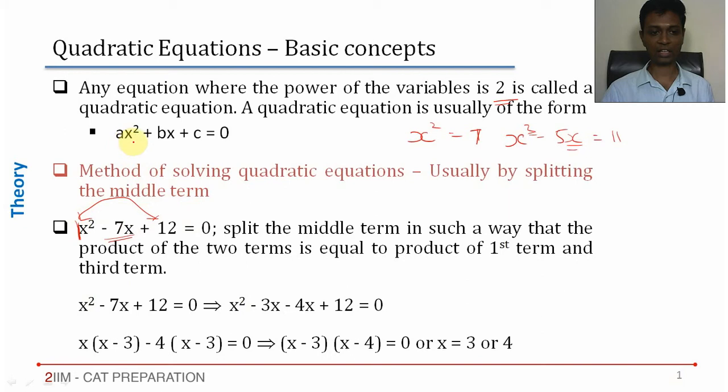If you have an equation which is ax² + bx + c, you will have to split b into two parts such that the product of the two parts is a into c. So, 1 into 12 is 12.